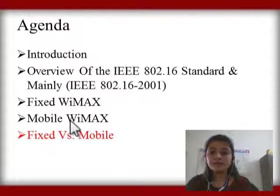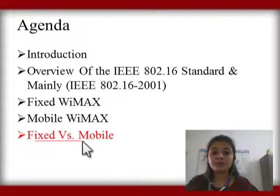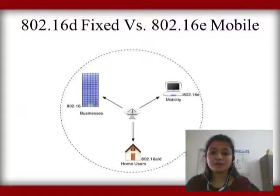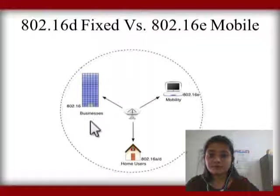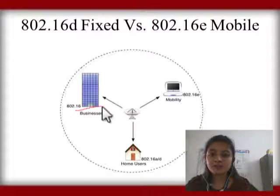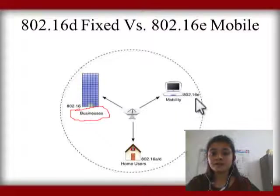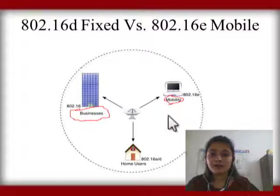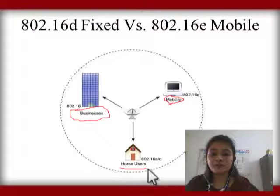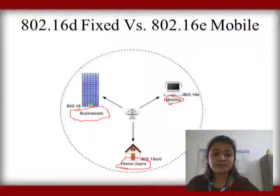Let us see the difference between Fixed and Mobile WiMAX. 802.16 is used in business. 802.16e is used for mobility. And 802.16d is used for home users.